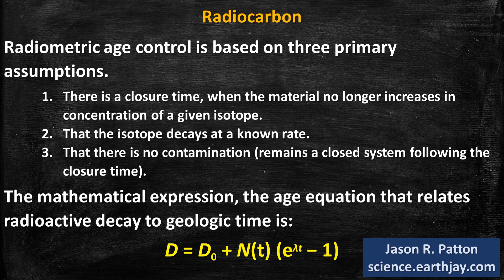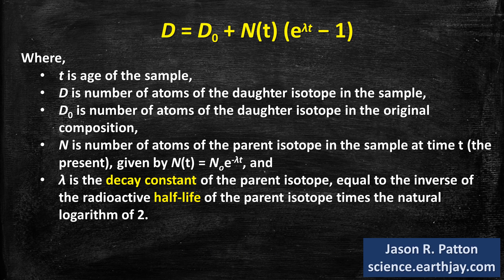Radiometric age control is based on three primary assumptions: there is a closure time when the material no longer increases in concentration of a given isotope; that the isotope decays at a known rate; and that there is no contamination and it remains a closed system following the closure time. The age equation, which relates radioactive decay to geologic time, is stated in yellow. Where t is the age of the sample, d is the number of atoms of the daughter isotope in the sample, d-sub-naught is the number of atoms of the daughter isotope in the original composition, n is the number of atoms of the parent isotope in the sample at time t (the present), and lambda is the decay constant of the parent isotope.